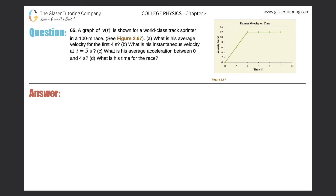Number 65. A graph of V of T is shown for a world-class track sprinter in a 100-meter race. What is his average velocity for the first four seconds?